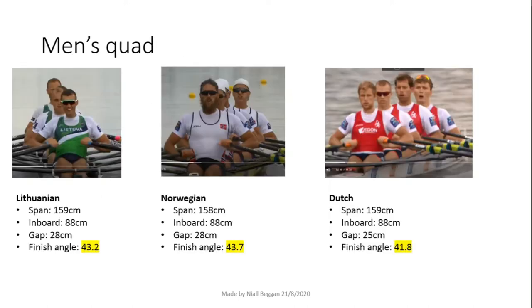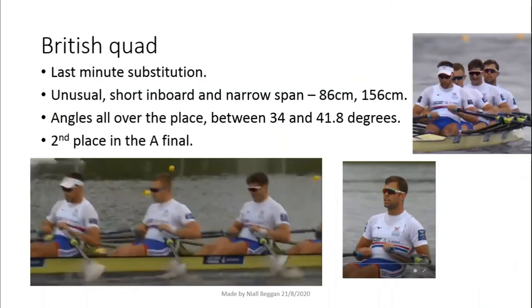The men's quads seem to have mostly similar angles to the men's singles. Note the bigger gap between the handles, due to the smaller inboard. The British quad was a mess. However, they had a last minute substitution before the start of the race, so perhaps there wasn't time to move the foot stretcher. Four different finish positions and an unusual rigging: 86cm inboard and 156cm span. And yet, they came second.